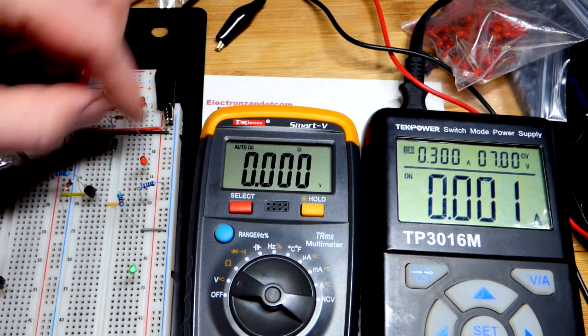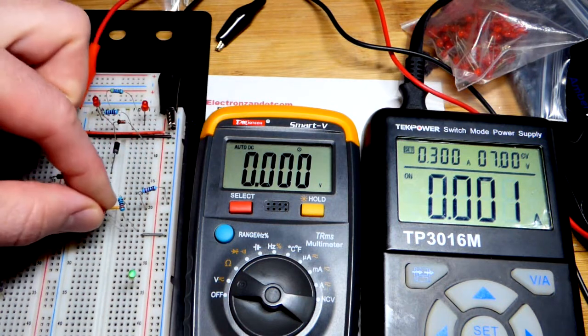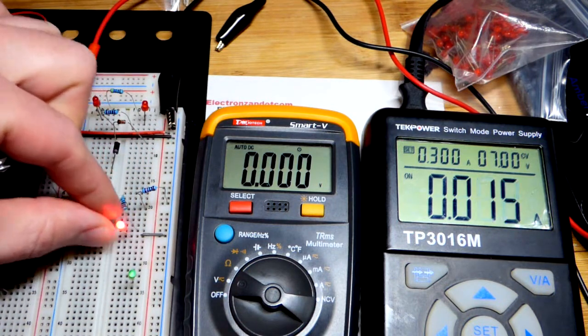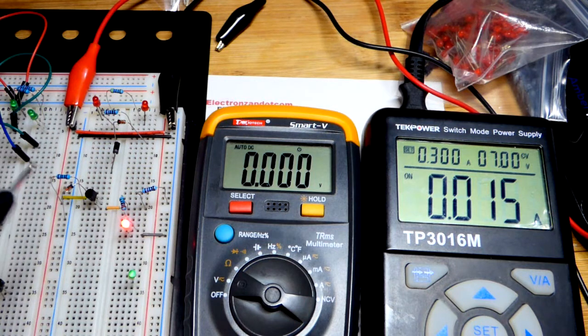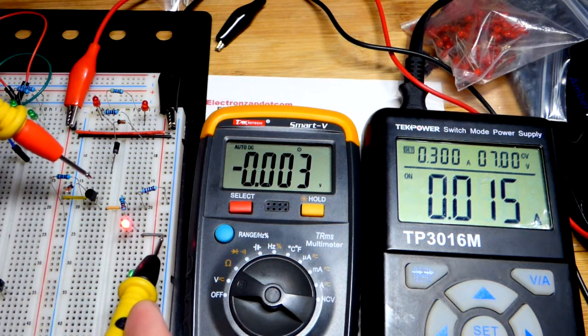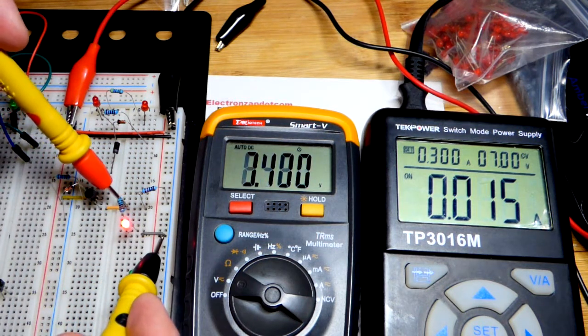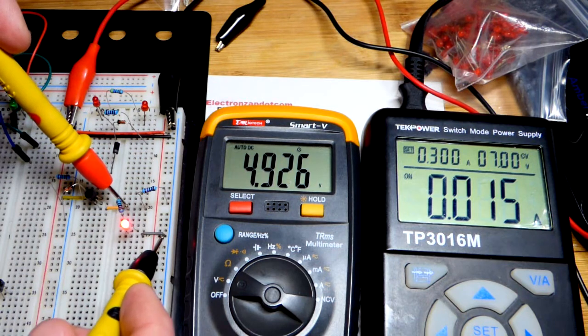And so this is a 220 ohm resistor. And it's pretty good for protecting an LED against five volts. So now we added the load and there should still be five volts across it right there.